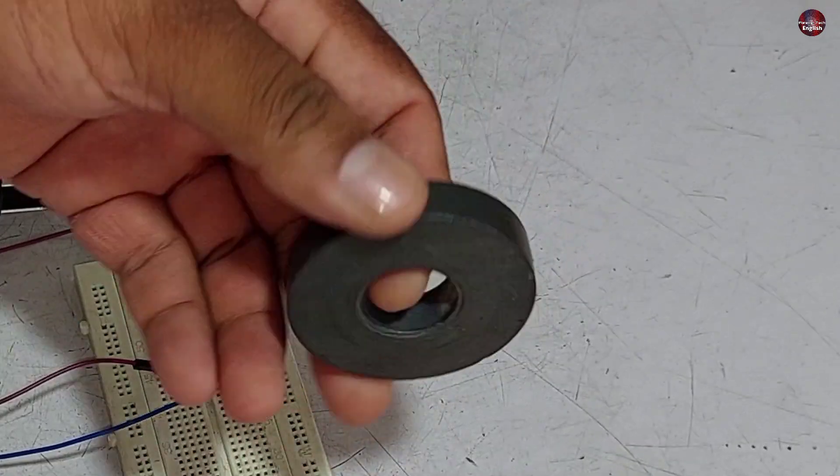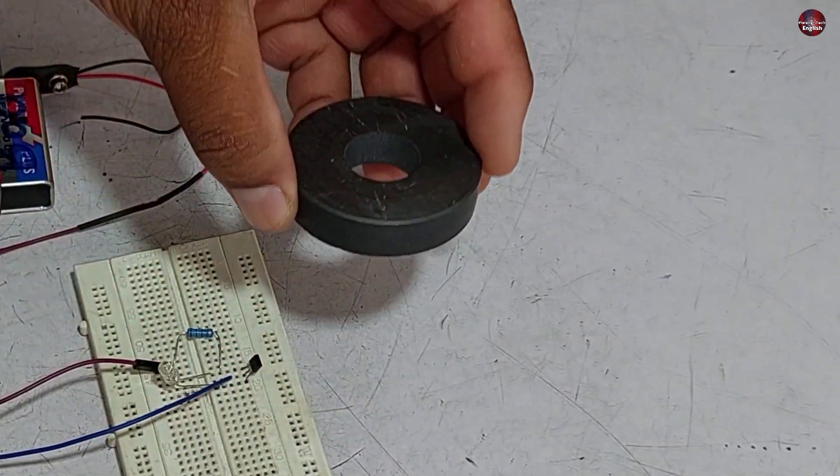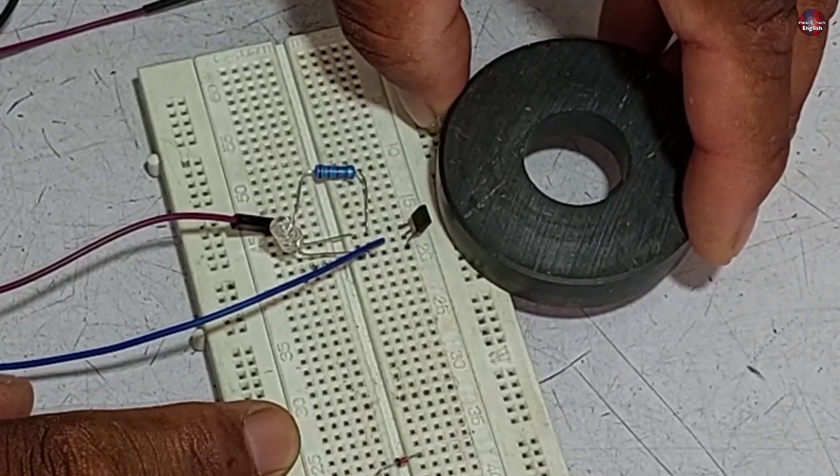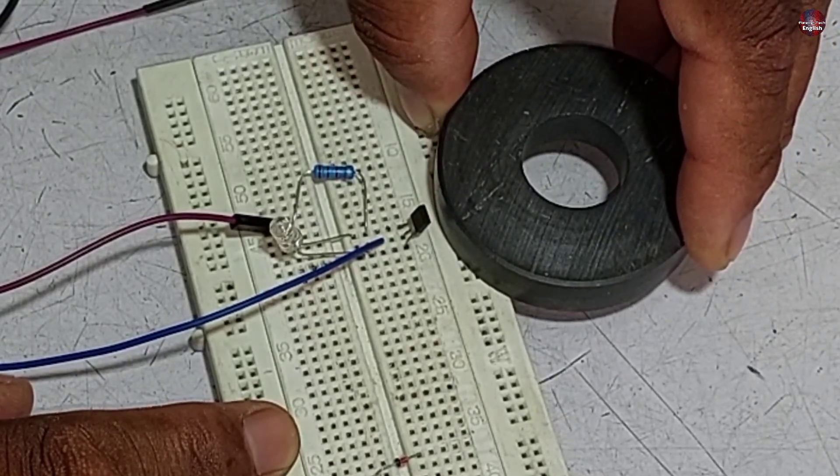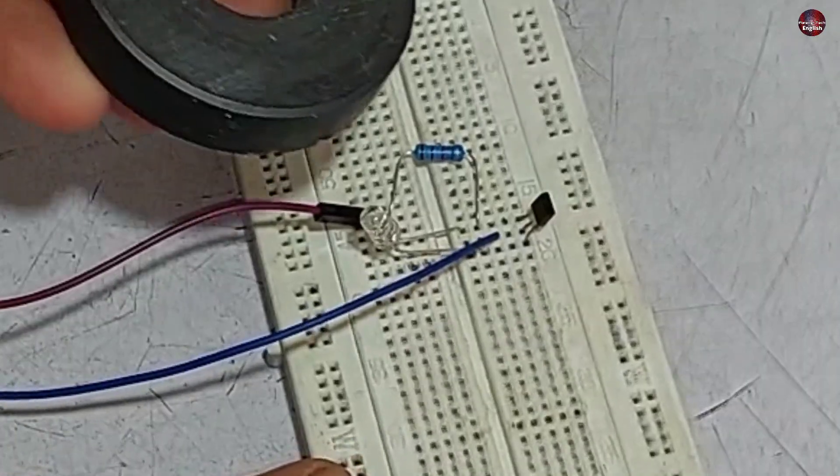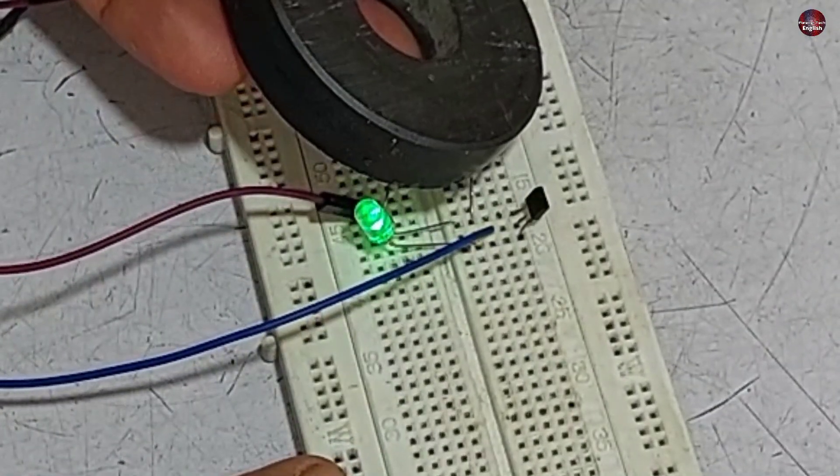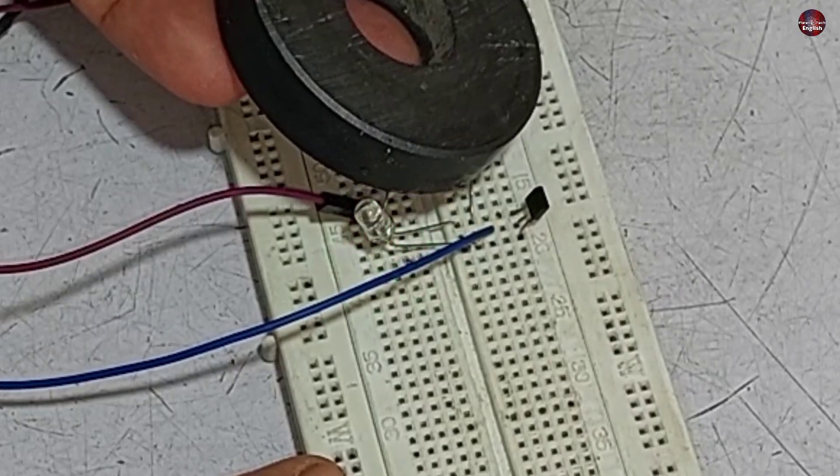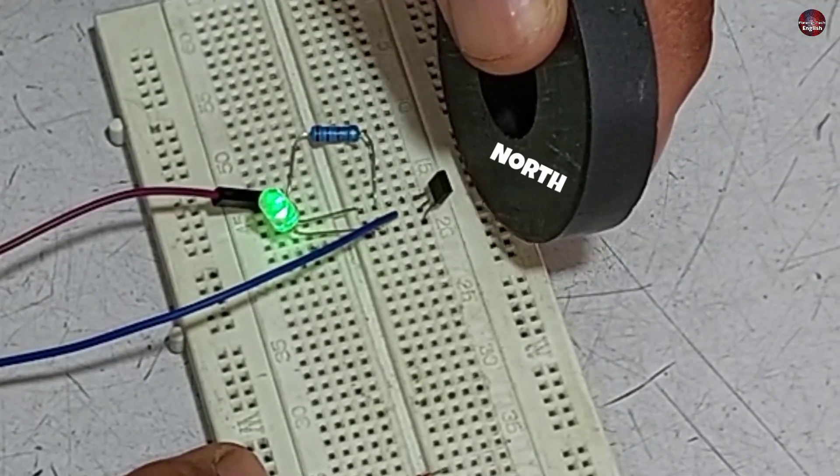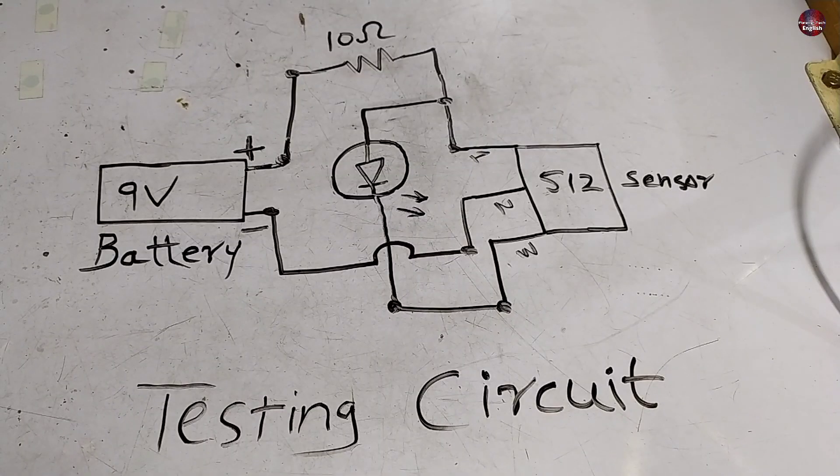Now if I test it with the ring magnet, I don't know what is north and the south pole in the ring magnet. As I brought the magnet near the back side of the hall sensor, it didn't work. It means this is the south pole of the ring magnet. Now when I place the south on the front side of the hall sensor, it is working. This flat side is the north pole of the ring magnet.